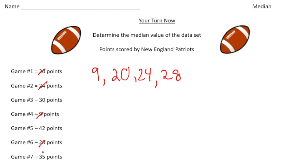And then 30. Followed by 35. And then finally 42 is our largest. So step number one is put the numbers in order from least to greatest.